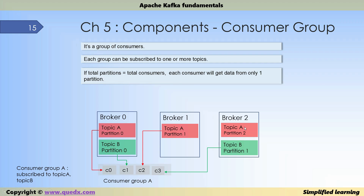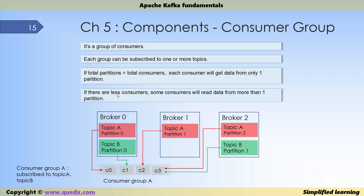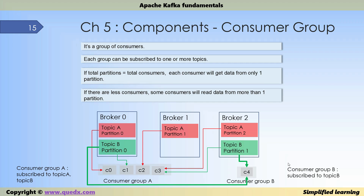If we introduce one more partition in topic A, total partitions across A and B becomes 5. Kafka decides the assignment — in this case C3 reads from two partitions (topic A partition 2 and topic B partition 1). So if there are fewer consumers than partitions, some consumers will read from more than one partition. We can also have a separate consumer group B with one consumer C4 subscribed to topic B — C4 reads all of topic B. The significance of consumer groups is that in a multi-partition topic, parallelism is achieved by having multiple consumers in a group, increasing effective throughput. This is a very unique feature that makes Kafka stand out among messaging brokers.